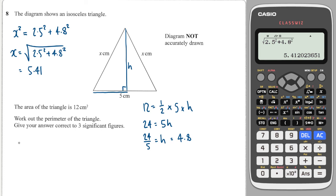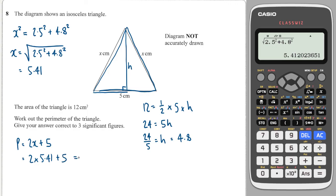The total perimeter is 2 lots of X plus 5, so that's 2 times 5.41 plus 5. I take that, times it by 2, then add 5, and I get 15.8 centimetres.